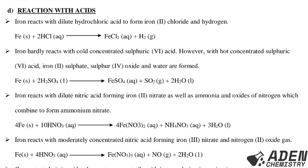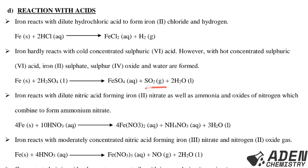Number four: reaction of iron with acids. Iron reacts with dilute hydrochloric acid to form iron(II) chloride and hydrogen gas. The equation is: Fe(s) + 2HCl(aq) → FeCl2(aq) + H2(g). Iron hardly reacts with cool concentrated sulfuric acid; however, with hot concentrated sulfuric acid, iron(II) sulfate, sulfur dioxide, and water are formed.